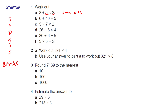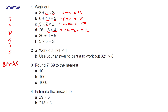Next one: six plus ten divided by five. We do the division first, so the six stays the same, plus two is equal to eight. The next one doesn't matter which we do first because they're the same operation, so we get 35 times two which is 70. Then multiply before subtraction: 26 minus 24 equals two. Division first: 30 divided by six is five, minus five is zero.